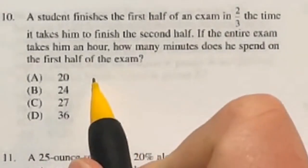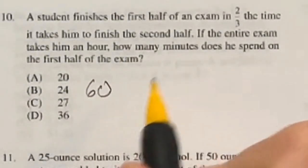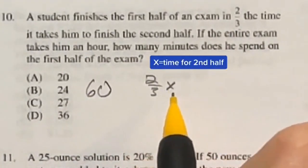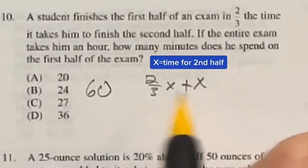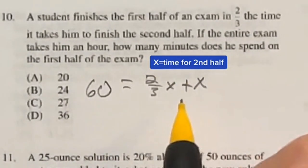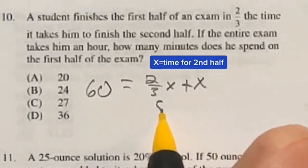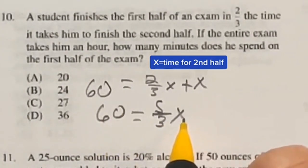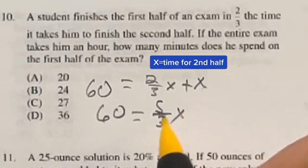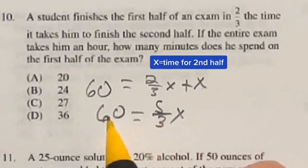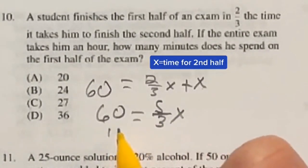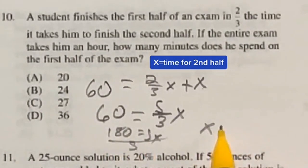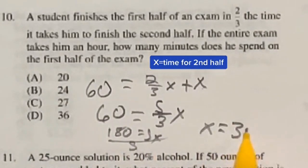So a student finishes an exam in 60 minutes, and it says that it took him two-thirds of the time for the first half as it did for the time of the second half. So that means that this is the equation we have here. If we combine the two of these, that gives us 5 over 3x equals to 60. So we're going to solve for x here to see what it took for the second half of the exam. So that means that 60 times 3 is going to give me 180 equal to 5x. Divide both sides by the 5 to get that x is going to be equal to 36.